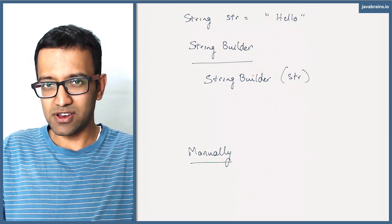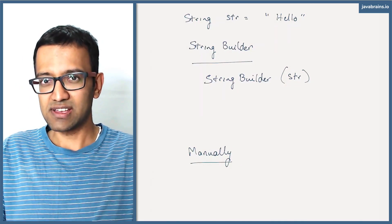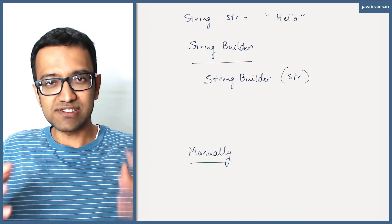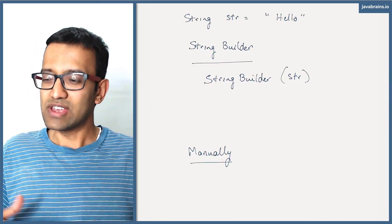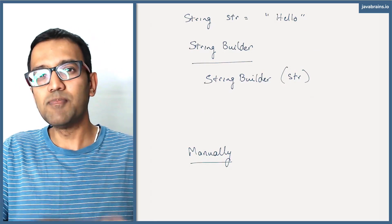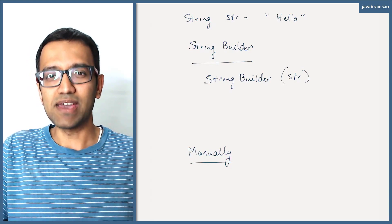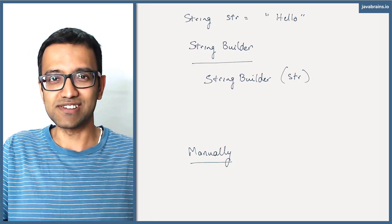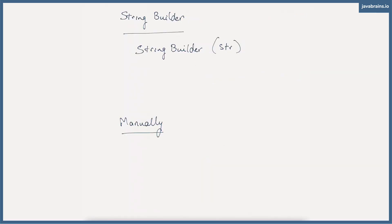So what we're going to do is take the string we want to reverse and create a StringBuilder instance out of it. The advantage is that the StringBuilder instance has certain APIs, one of them being reverse. So once I have a StringBuilder instance, I'm going to call the dot reverse method, and then dot toString. And now I have the reversed string.